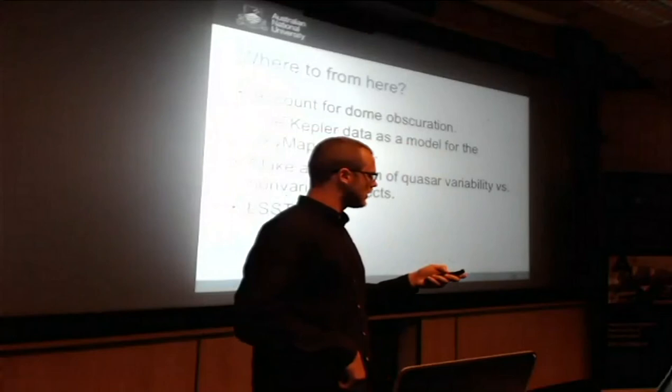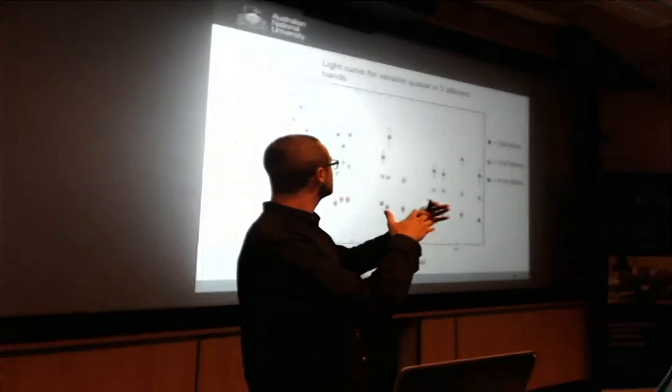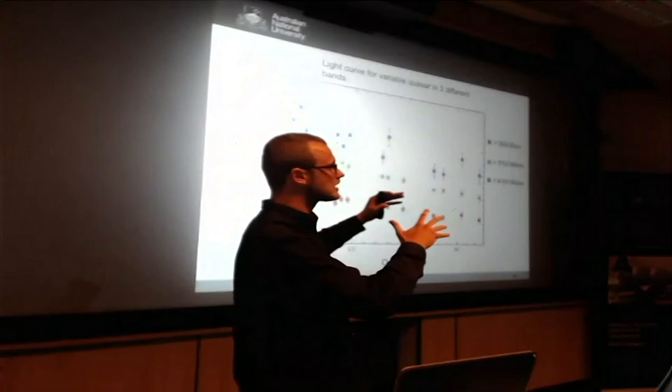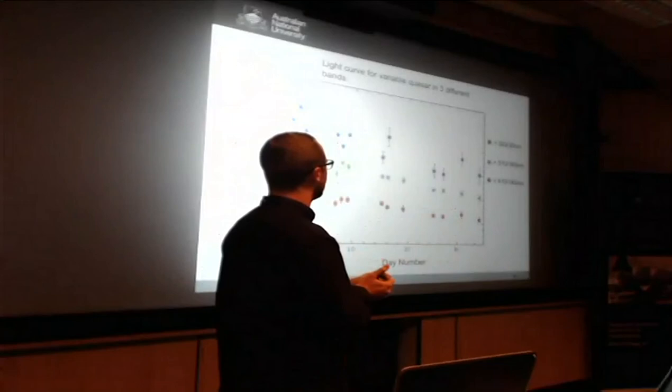The Kepler data, it just so happened that one of the 68 quasars was actually this one. What we can do with the Kepler data is use that as a model for this and see if we can just match it up with these three different bands and see if we can detect some sort of time lag just by shifting it.